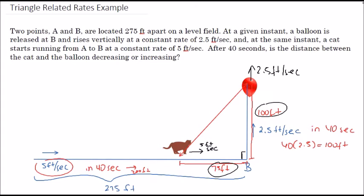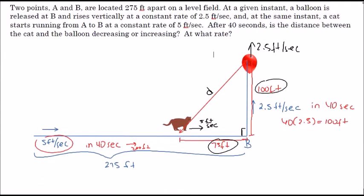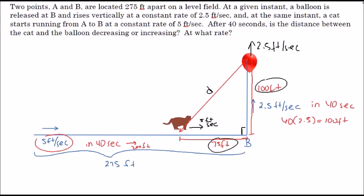We need to find the hypotenuse. I'm also going to ask at what rate. Note that 275 isn't really important anymore. We used it to find out where the cat is in 40 seconds, but we don't really need the 275 anymore.